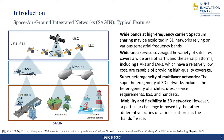Wideband service coverage: the variety of satellites covers a wideband area of Earth, and aerial platforms including HAPS and LAPS and so on. The superheterogeneity of 3D multi-layer networks includes heterogeneity of architectures, service requirements, base stations, and terminals. Mobility and flexibility in 3D networks is also another important aspect. The convenience of HAPS and LAPS provides a substantial degree of flexibility for communications.